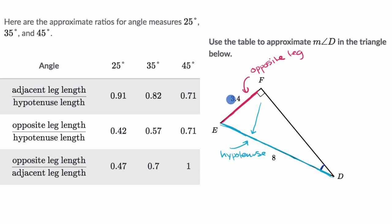So we're given the opposite leg length and the hypotenuse length. Which of these ratios deal with the opposite and the hypotenuse? The first one is adjacent and hypotenuse. The second one is opposite and hypotenuse—that's exactly what we need. We're looking at the opposite leg length over the hypotenuse length.